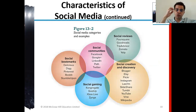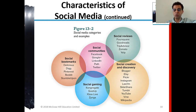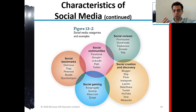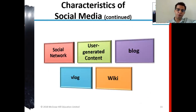Social media categories include social reviews, social communities like Facebook, social bookmarks like Pinterest and Reddit, social gaming like Xbox Live, and social creation and discovery platforms like Instagram and YouTube. These are made up of social networking, user-generated content, blogs, vlogs, and wikis.